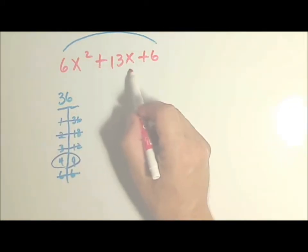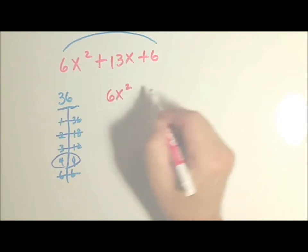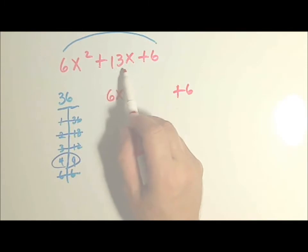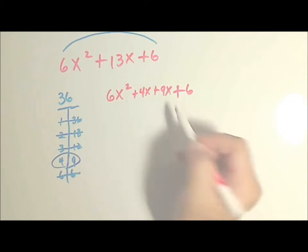Again, we're looking to break 13x. So 6x squared is just fine. And the 6 is just fine. It's the 13x that's going to be broken into 4x and 9x or 9x and 4x. So 4x and 9x.